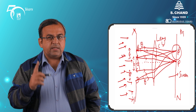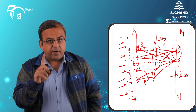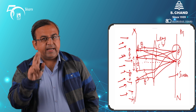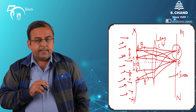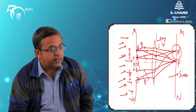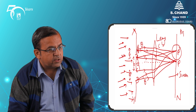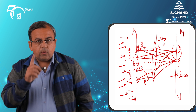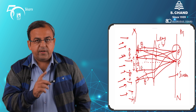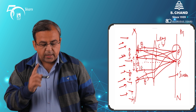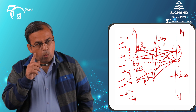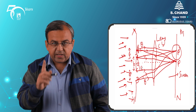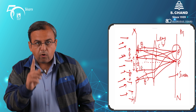The diffraction pattern from two slits has to be considered in two ways. If we draw a perpendicular and consider angle theta, these points give us what type of diffraction pattern we normally observe from two slits. We have to consider two parts: number one — the interference phenomenon due to the secondary waves emanating from corresponding points of two slits.